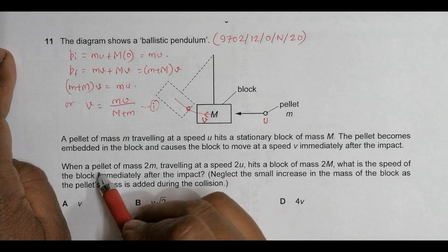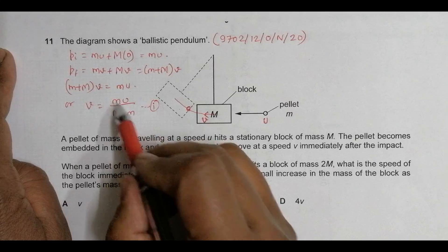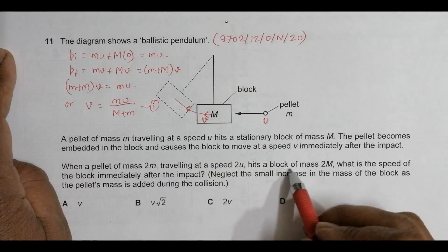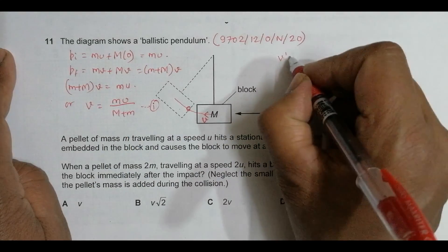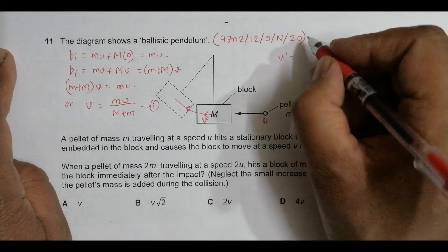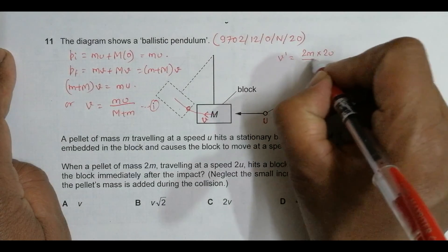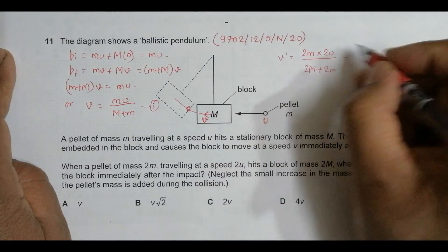In the second case, the pellet mass is 2m, speed is 2u, and block mass is 2M. We need to find the new velocity: V' = (2m × 2u)/(2m + 2M).